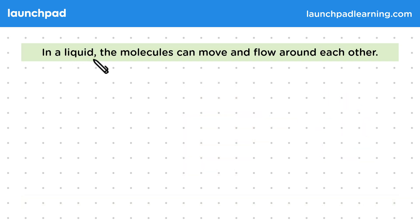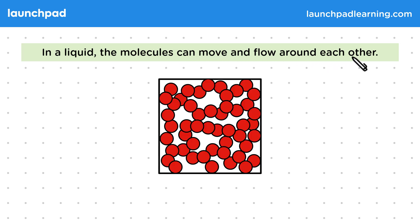In a liquid, the molecules can move and flow around each other. Remember this is what the structure of a liquid looks like. The molecules aren't moving independently, but they also aren't in a rigid structure. This is because the bonds between the molecules are weaker, so they can move around more.